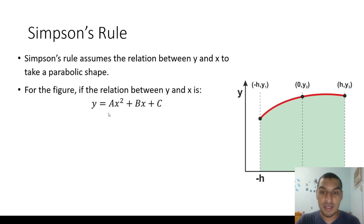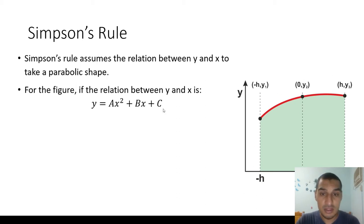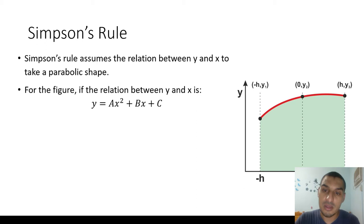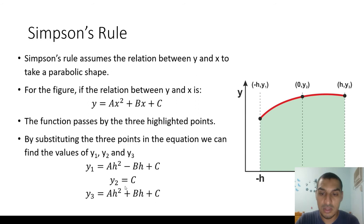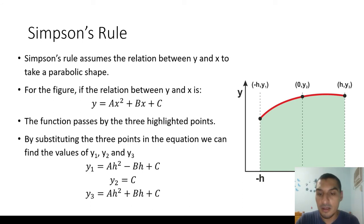The parabolic relation is described mathematically as ax² + bx + c. By doing this, we assume that the three points satisfy this equation, and this is the reason Simpson's Rule is more accurate than the trapezoidal rule. We can substitute the three points into the equation, giving us y1, y2, and y3 expressions through direct substitution.